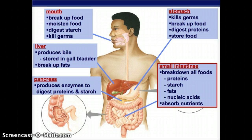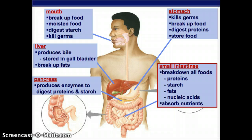The stomach kills germs, breaks up food, digests proteins with pepsin, and stores food — up to two liters. Then we go to the small intestine, where we break down all the foods: proteins, starch, fats, and nucleic acids, and also absorb the nutrients. Our two accessory organs are the liver, which produces bile stored in the gallbladder, and it also breaks up fats — the bile works with the lipase to break down fats. The pancreas produces enzymes to digest proteins and starch.